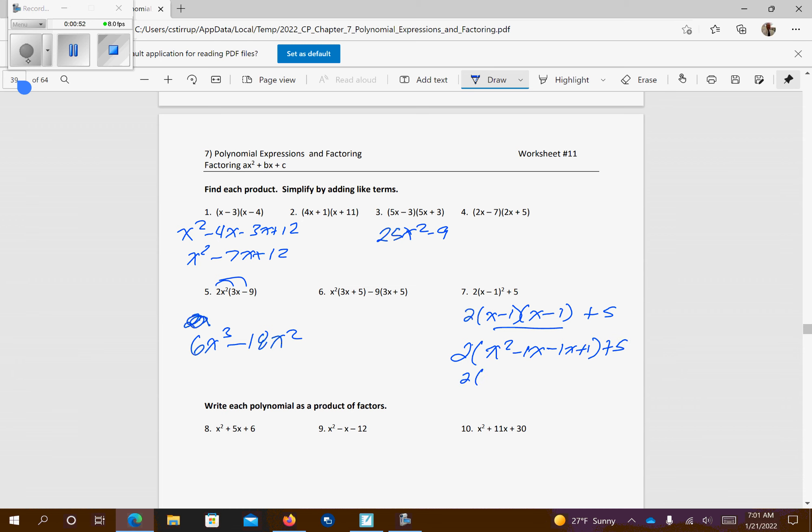Let's combine our like terms, so x squared minus 2x plus 2, or plus 1, plus 5.